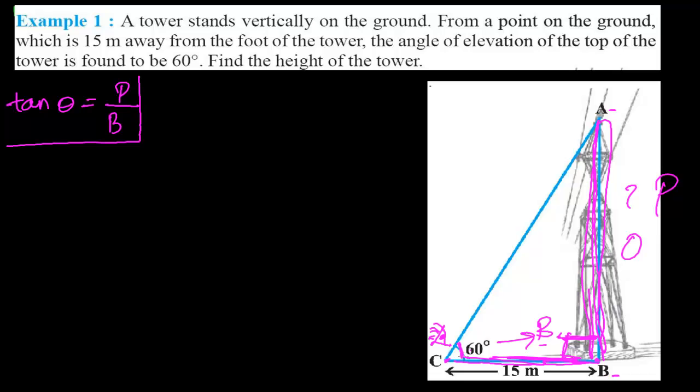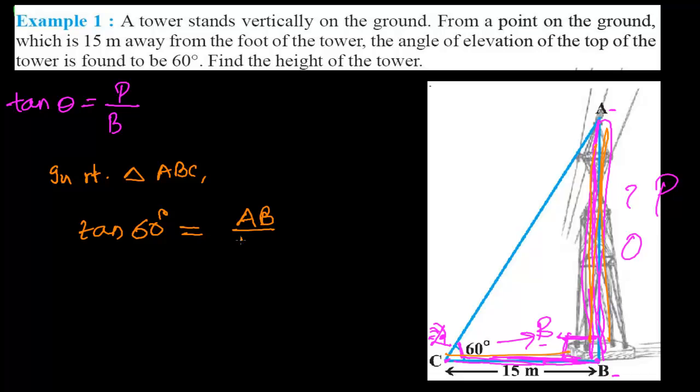In right angle triangle ABC, tan 60 degrees equals the opposite over the base, so tan 60° = AB/BC. We know the value of tan 60.